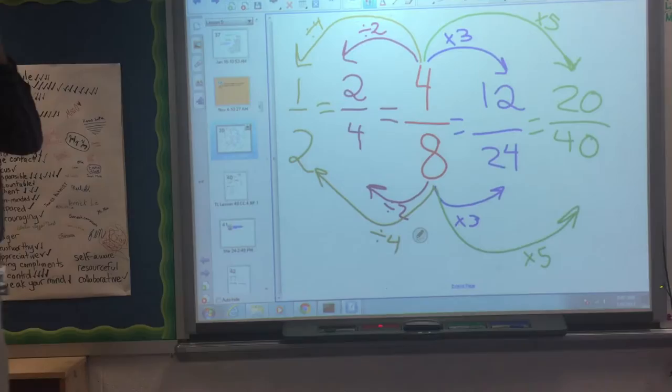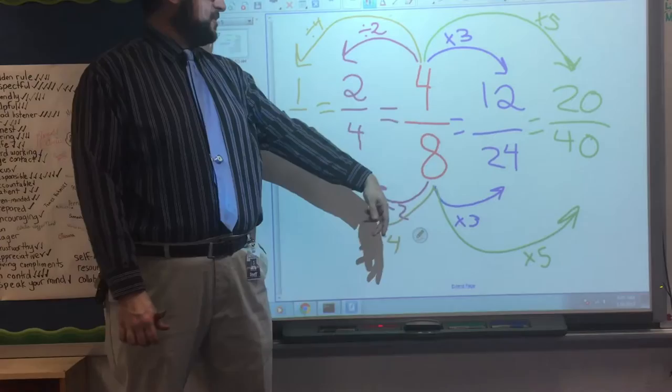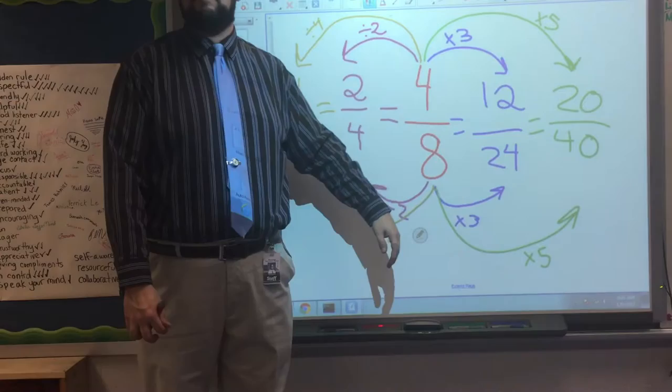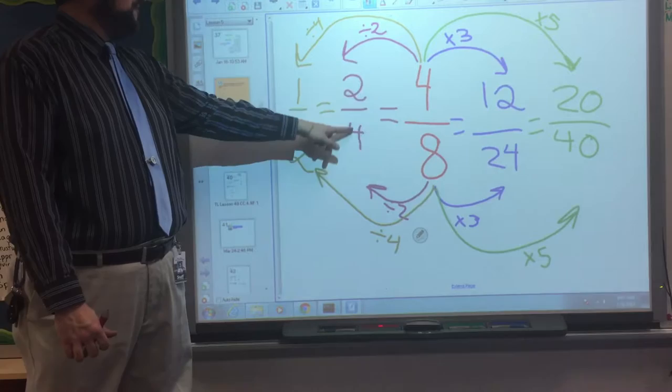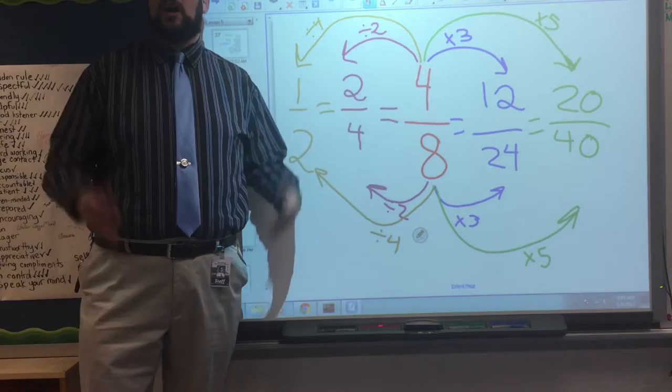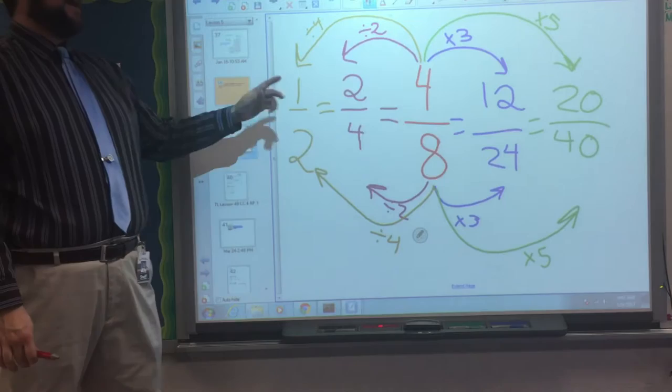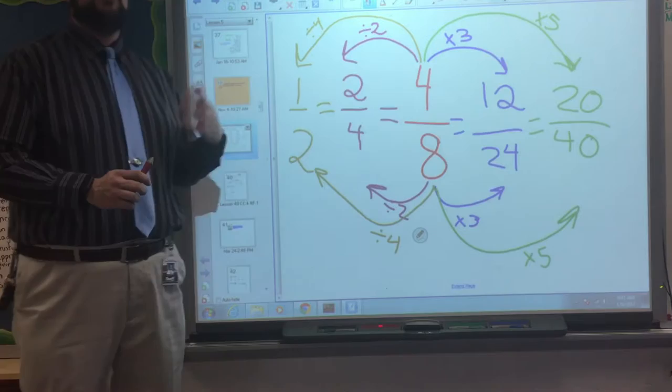So you'll notice, we started off with 4 eighths as our starting fraction. And I was able to use multiplication to come up with equivalent fractions of 12 twenty-fourths and 20 fortieths. And there could be tons of others. But I was also able to simplify that. I was able to simplify it to make 2 fourths or to make 1 half. All of these fractions are equivalent. But a simplified fraction is when you divide it to give it a smaller digit in the numerator's place and a smaller digit in the denominator's place. You just have to make sure that they're still equivalent.